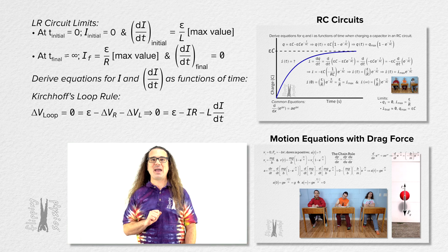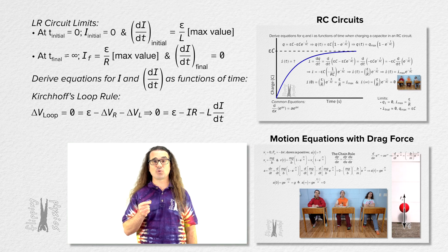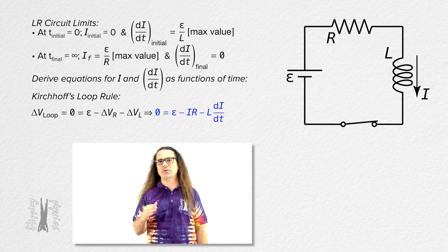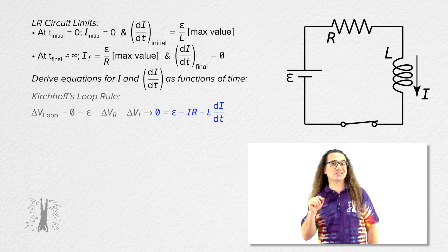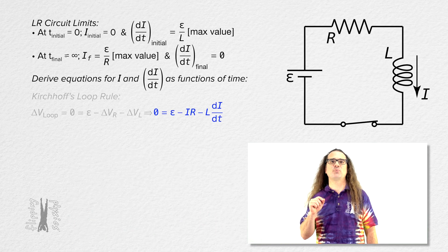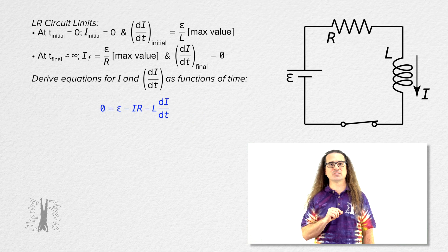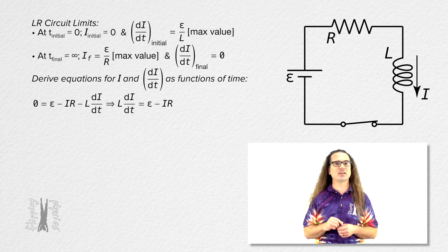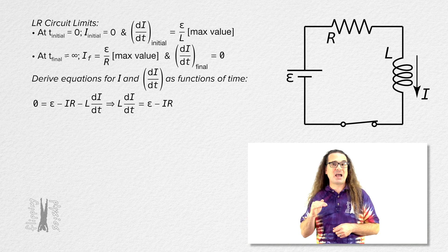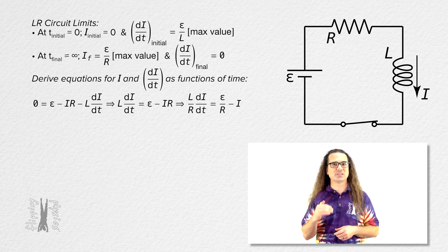Going back to the Kirchhoff's loop rule equation for this LR circuit: zero equals emf minus current times resistance minus inductance times the time rate of change of current. We can move inductance times the derivative of current with respect to time to the left-hand side of the equation, and then divide the whole equation by resistance.